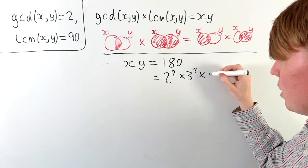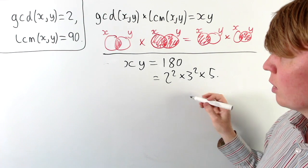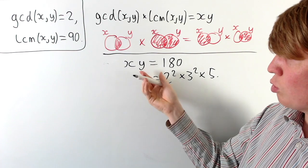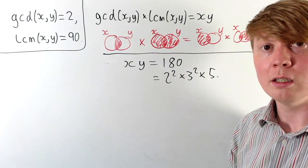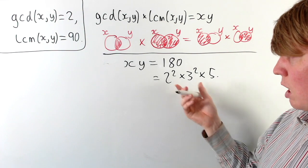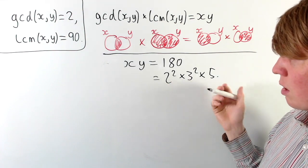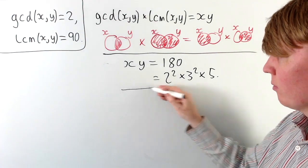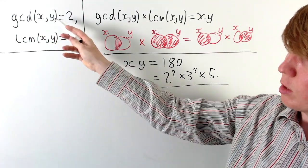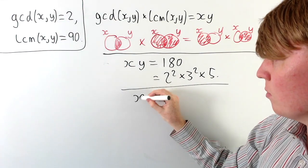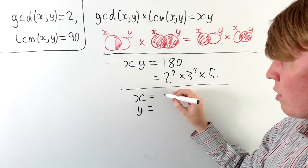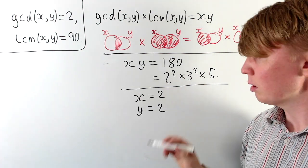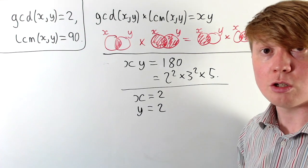The prime factorisation of 180 is 2 squared times 3 squared times 5. The structure here is that we're finding two integers which multiply to give 180, so we need to distribute all the 2s, 3s, and the 5 between x and y so their product is 180. Since the greatest common divisor must be 2, we know 2 is a common divisor of both, so one 2 goes to x and one 2 goes to y.